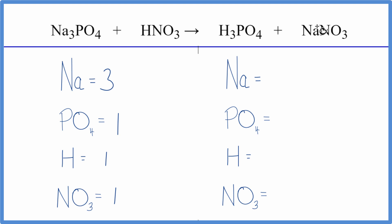On the product side, we have one sodium, one phosphate, three hydrogen atoms, and then the one nitrate.